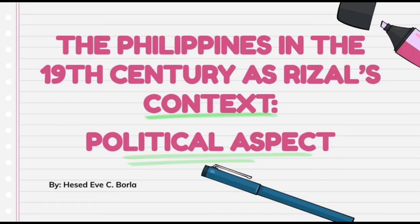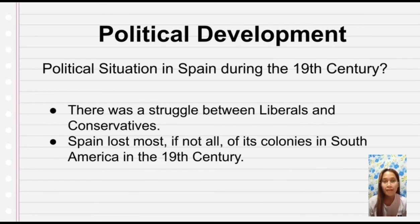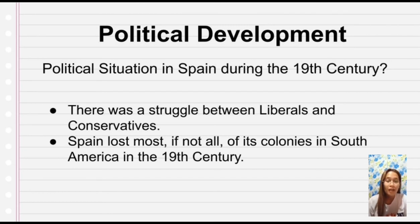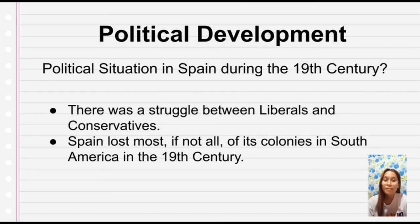Now for the political development, I would like to ask a question first: what was the political situation in Spain during the 19th century? Spain in the 19th century was typified by the struggle between liberals and conservatives. The liberals were the people who wanted to fight for democracy — they wanted the people to vote for their leader, and they wanted freedom of speech, freedom of the press, and freedom of assembly. While the conservatives wanted to remain with the status quo.